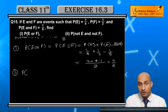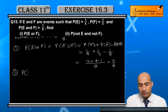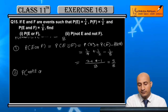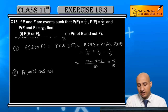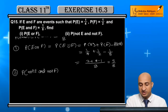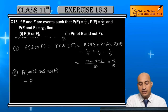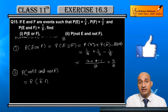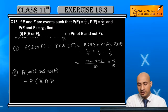Now for the second part, we need to find P(not E and not F), that is P(Ē intersection F̄).